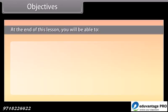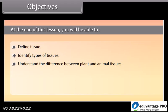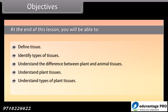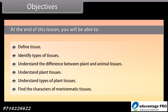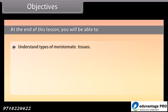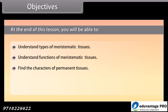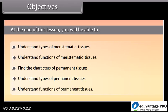Objectives: At the end of this lesson, you will be able to define tissue, identify types of tissues, understand the difference between plant and animal tissues, understand plant tissues, understand types of plant tissues, find the characters of meristematic tissues, understand types and functions of meristematic tissues, find the characters of permanent tissues, and understand types and functions of permanent tissues.